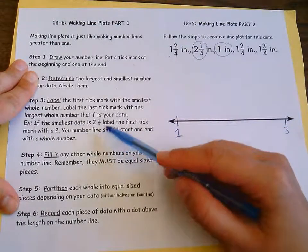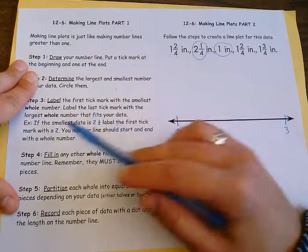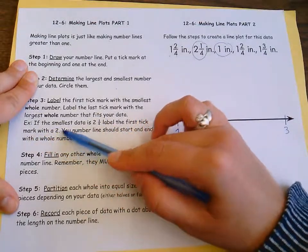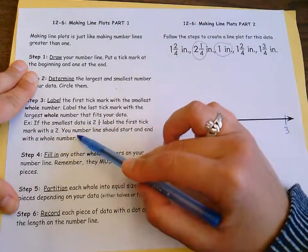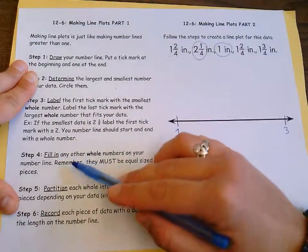So here was an example if we need it. If my smallest data point is two and one fourth, I'm going to label the first tick mark with a two because it's a little bit less than that. And your number line should start and end with a whole number, which it does.